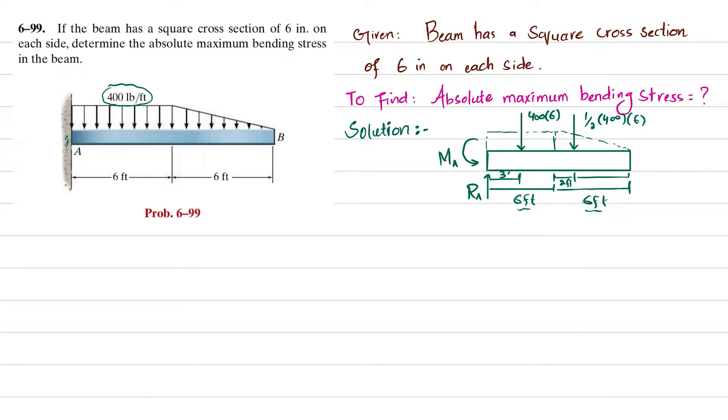This will act at a distance of L/3, so 6 by 3, which is 2 feet from this side. This distance is 2 feet and the remaining distance is 4 feet. Using equilibrium conditions, we will find M_A. In a cantilever beam, maximum bending stress occurs at the fixed support. Using the equilibrium condition, the sum of all moments about point A must equal zero, taking counterclockwise moments as positive.